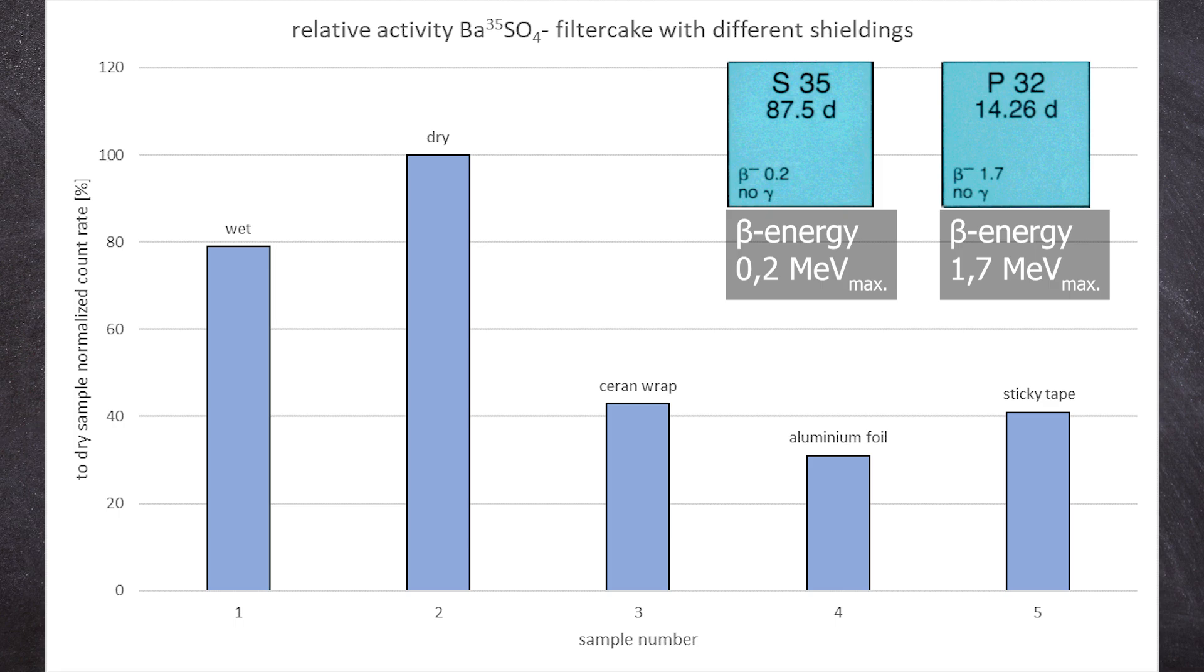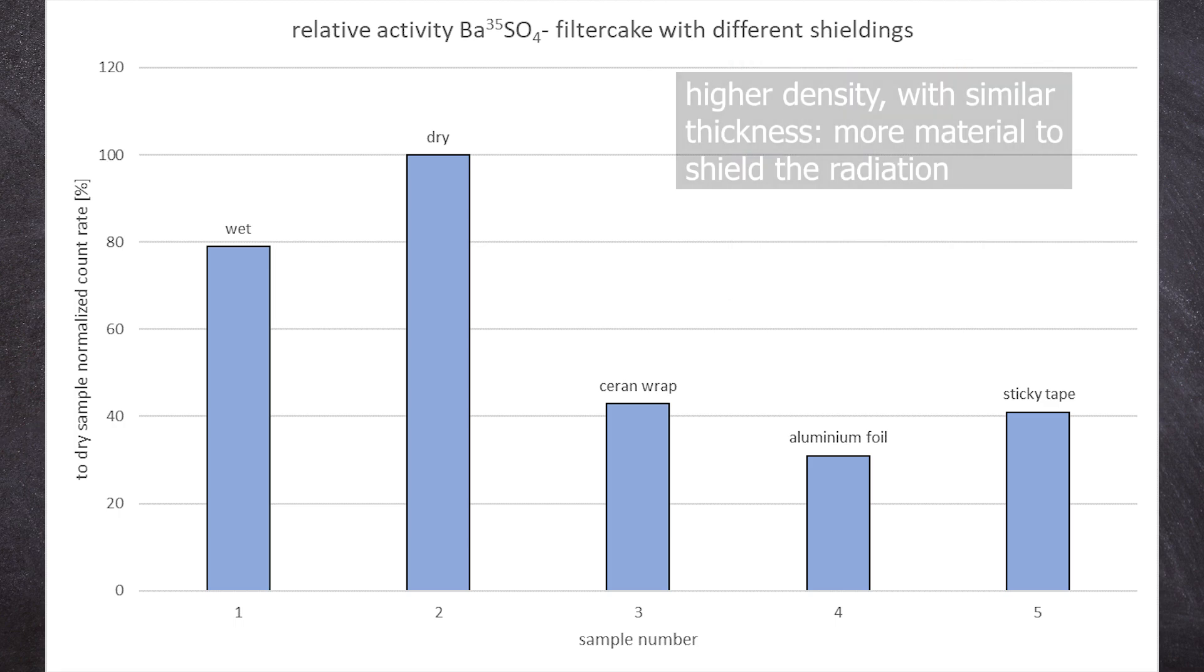This finding is crucial for preparing also open alpha sources with polonium as well. Plastic films and adhesive tapes are similar in material and thickness, while aluminum is a metal with a higher density providing better shielding. Therefore, we get lower counting rates with more material between the sample and the detector.